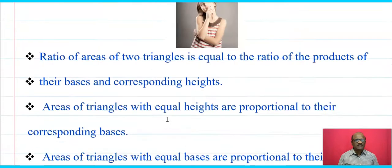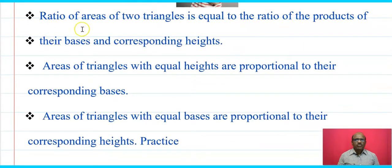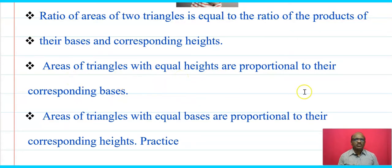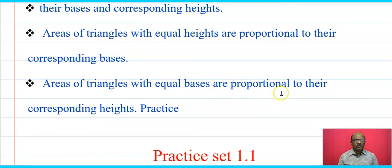Remember these three properties: the ratio of areas of two triangles equals the ratio of the products of their bases and corresponding heights; areas of triangles with equal heights are proportional to their corresponding bases; areas of triangles with equal bases are proportional to their corresponding heights.